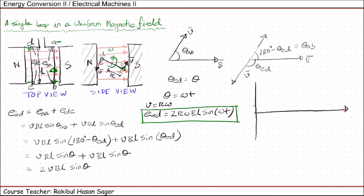If we plot this, the maximum magnitude will be +2rωBL and the minimum magnitude will be −2rωBL, plotted against time t. I want you to analyze what will happen if the loop rotates with a higher angular velocity than this, and compare with the reference figure — also what will happen if the loop rotates with an angular velocity slower than this, so you have a clear conception of how to change the frequency and magnitude when constructing a generator.